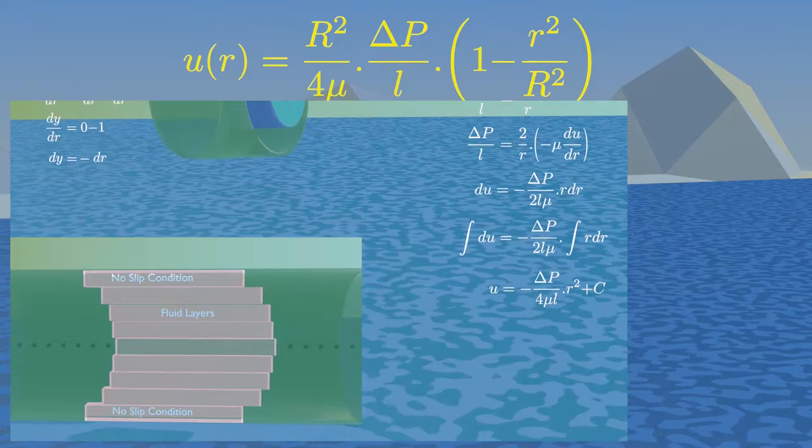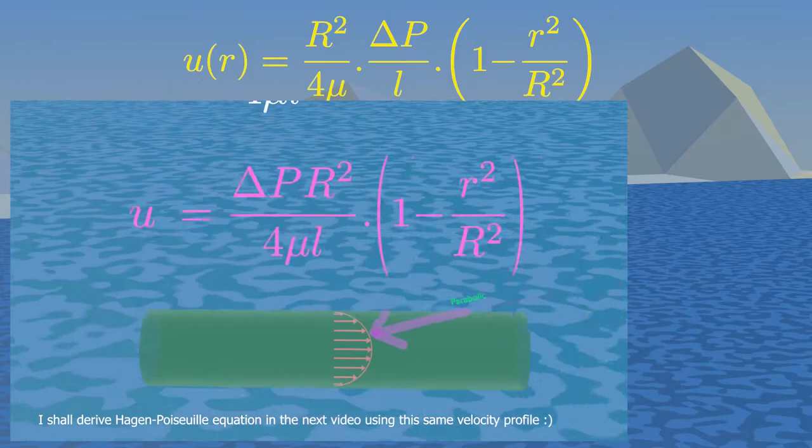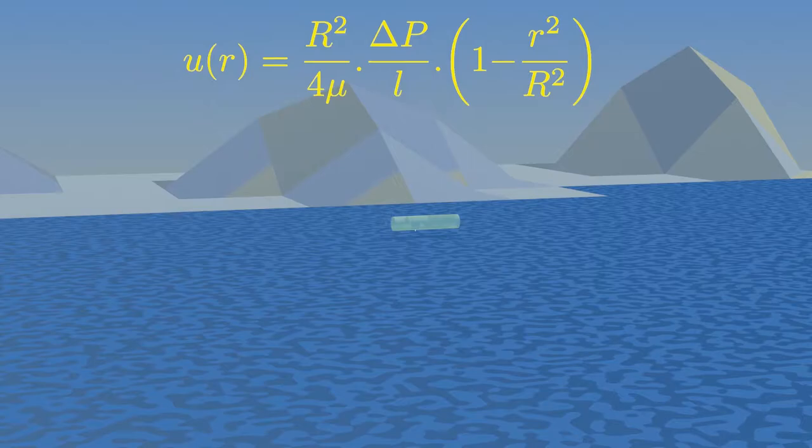The velocity profile equation for laminar flow, which we derived last time. Now, we need this velocity equation to derive the volume flow rate in a circular pipe.